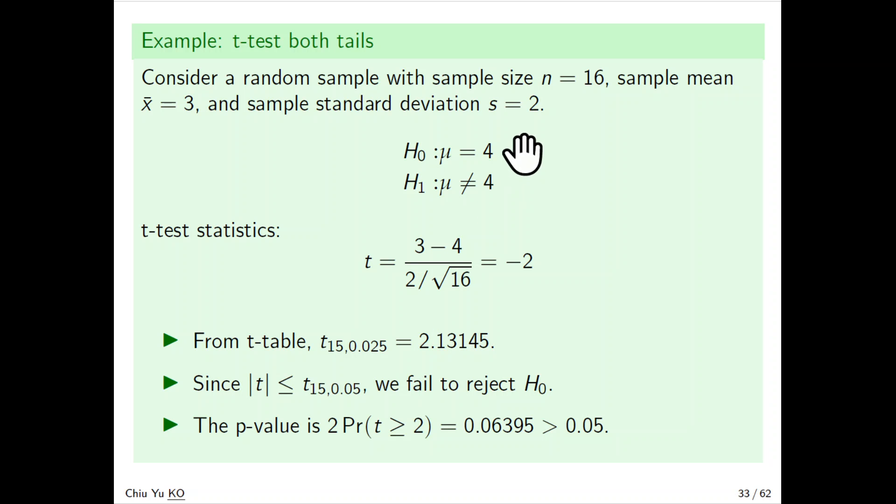Here we have n=16, x̄=3, s=2, testing μ=4 versus μ≠4. The test statistic is again (3-4)/(2/√16) = -2. From the t-table, the critical value is now much bigger, more than 2 - it's 2.13145. You can see it's different from before: we fail to reject because the test statistic's absolute value is less than the critical value. Looking at the p-value, 2×Pr(t>2) = 0.06395, which is more than 5%, so we fail to reject.